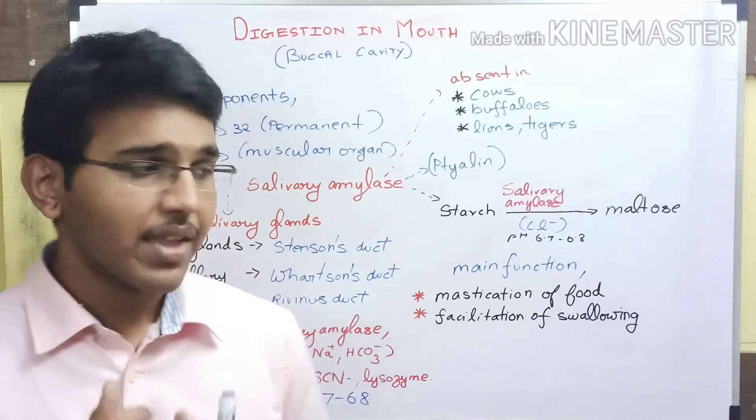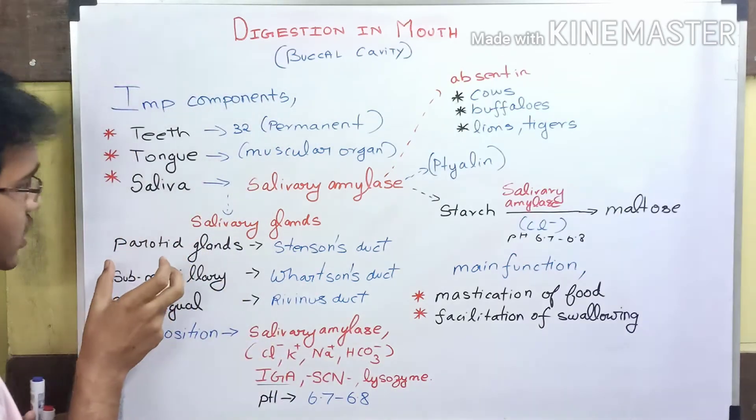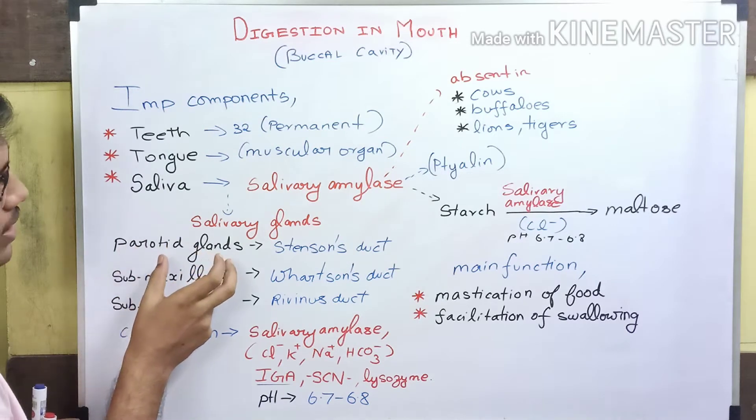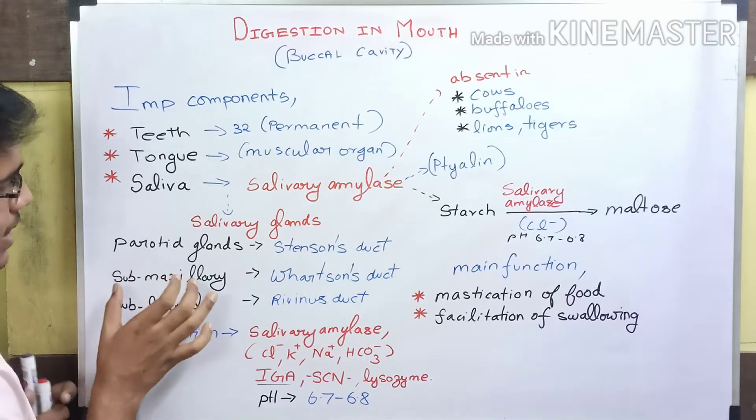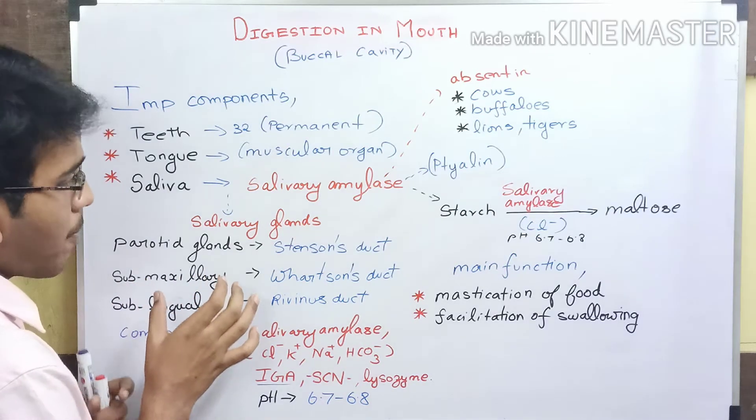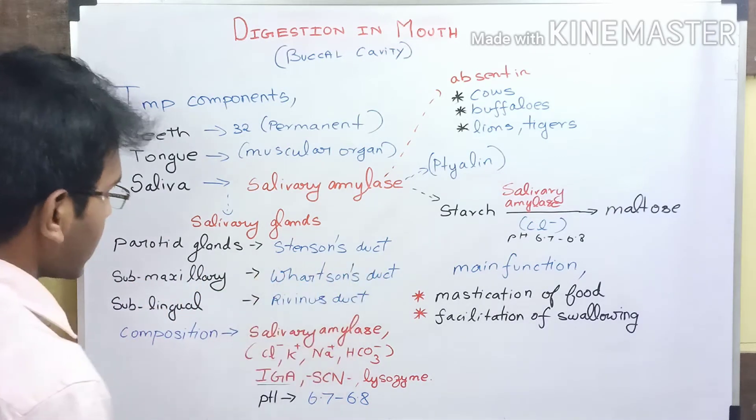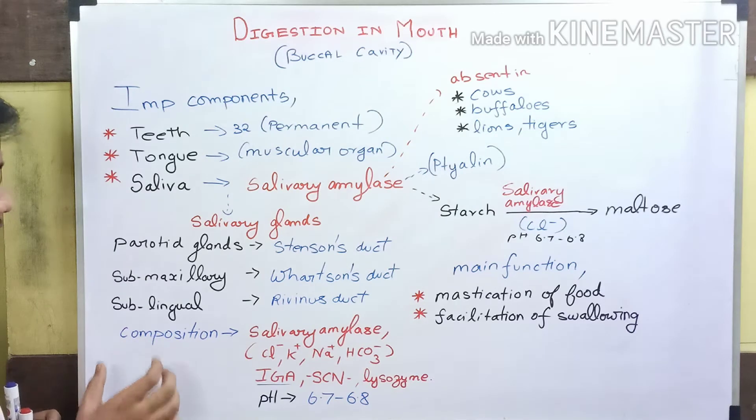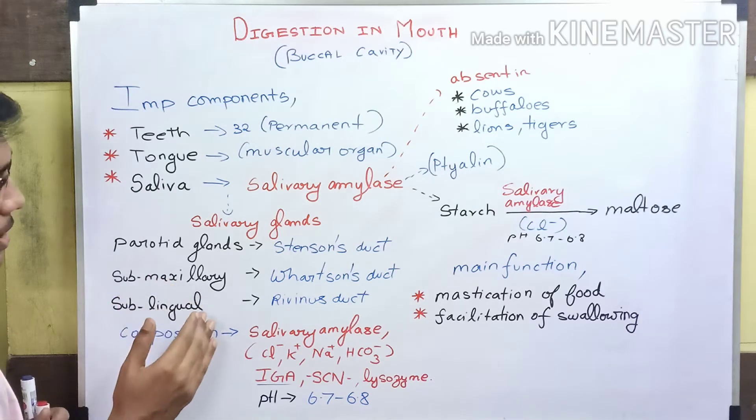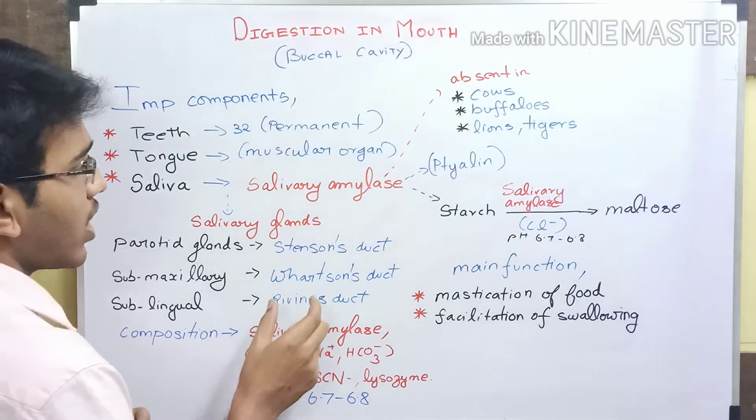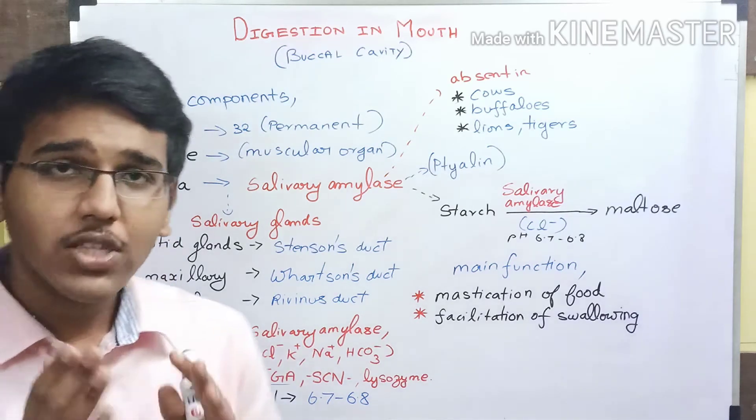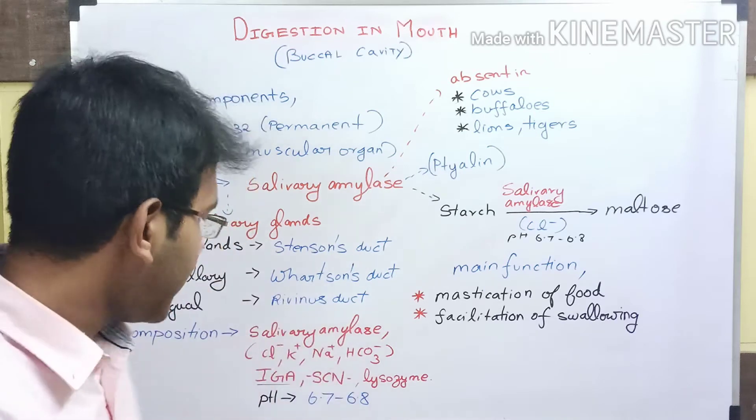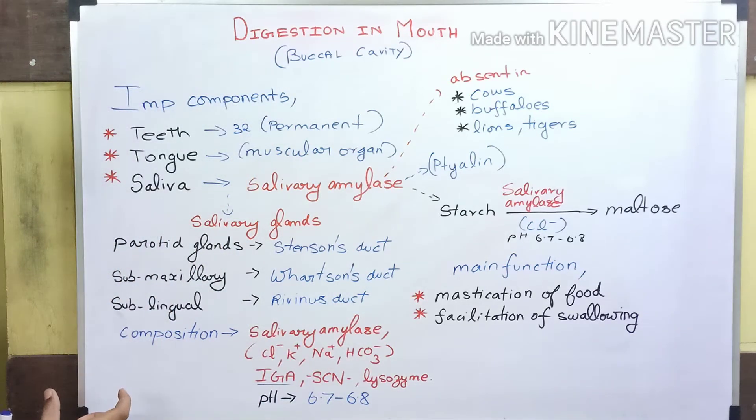The secretions of the parotid gland reach the buccal cavity through Stensen's duct, submaxillary gland through Wharton's duct, and sublingual gland through Rivinus duct. All three glands are exocrine glands since they produce enzymes.